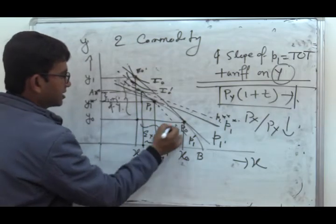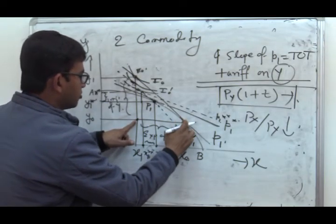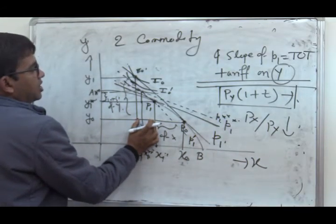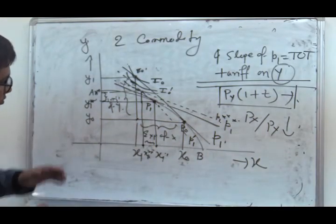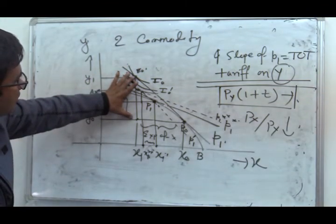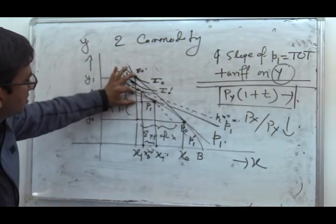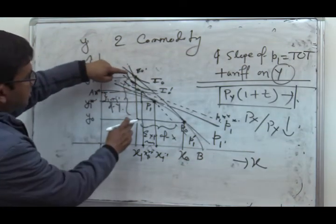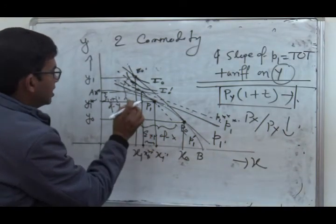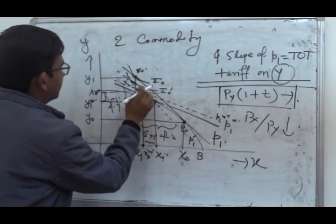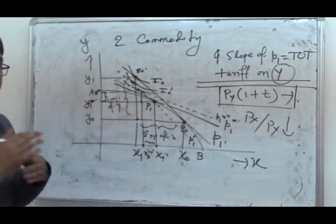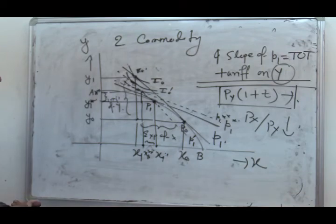Comparing before and after tariff: the initial volume of export of X shrinks to a smaller volume after tariff, and the initial volume of import of Y also shrinks. So both the volume of imports and the volume of exports shrink. This is the trade effect of tariff.